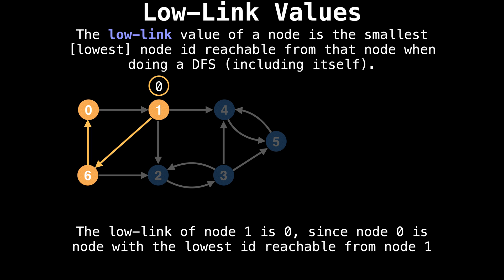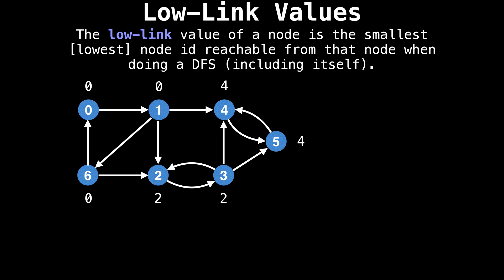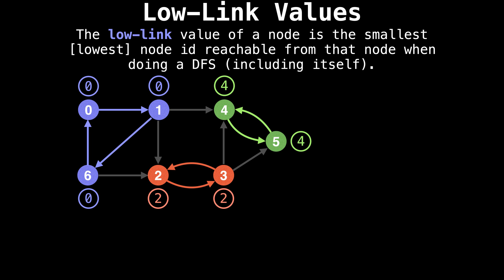For example, the low-link value of node one is zero, since node zero is the node with the lowest ID reachable from node one. Similarly, the low-link value of node three is two, since node two is the node with the lowest ID reachable from node three. So if we assign all the low-link values to all the nodes, we get the following setup. From this view, you realize that all nodes which have the same low-link value belong to the same strongly connected component. If I assign colors to each SCC, you can clearly see that for each component, all the low-link values are the same.